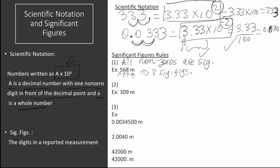The second rule is that zeros between non-zeros are significant. As an example, we have 309 meters. The 3 and 9 are significant by rule 1, and the zero is significant by rule 2 because it is in between two non-zero numbers. So there are three significant figures.